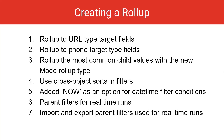With 17.21, you can now roll up to URL and phone target type fields. We have a new rollup type called mode, which rolls up the most common child values. You can use cross object sorts and filters.